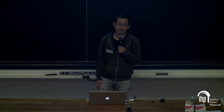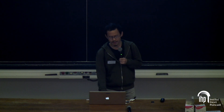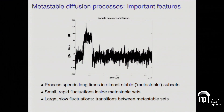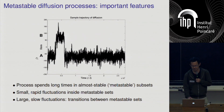Without further ado, let me talk about the objects that I'm interested in, and they are metastable diffusion processes. So what are metastable diffusion processes? They're basically a class of random dynamical systems whose trajectories have three important features that I'm interested in. First of all, the process spends a long time in almost stable, or what I call metastable, subsets.